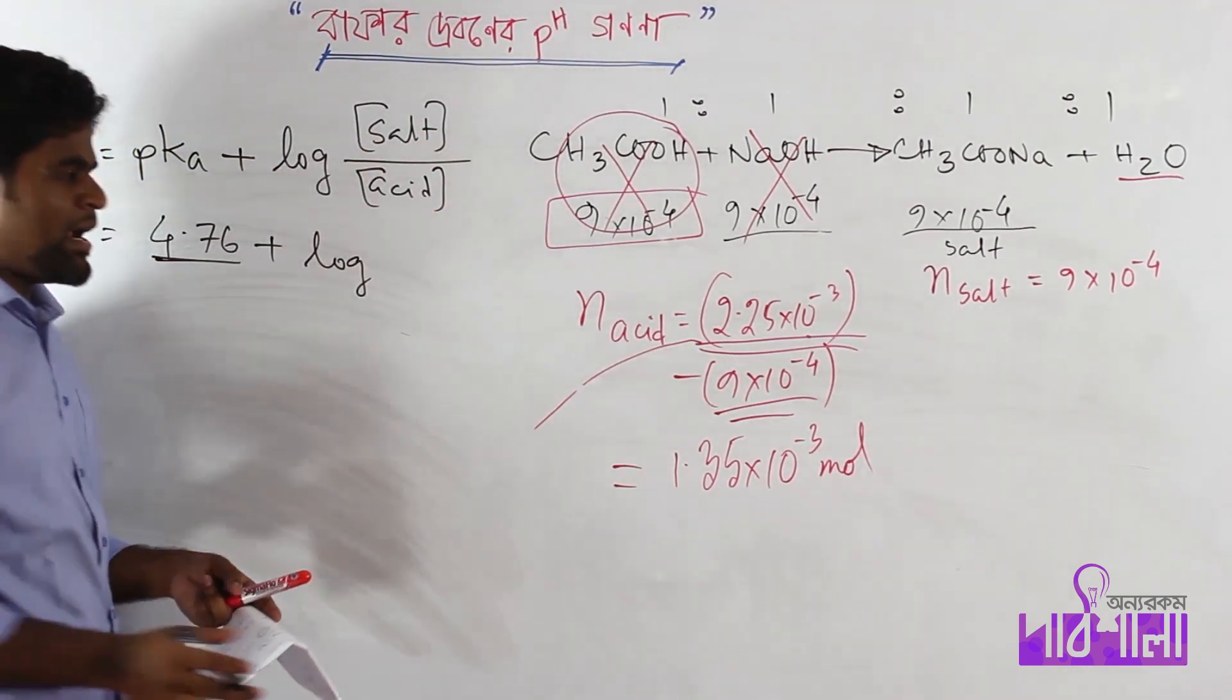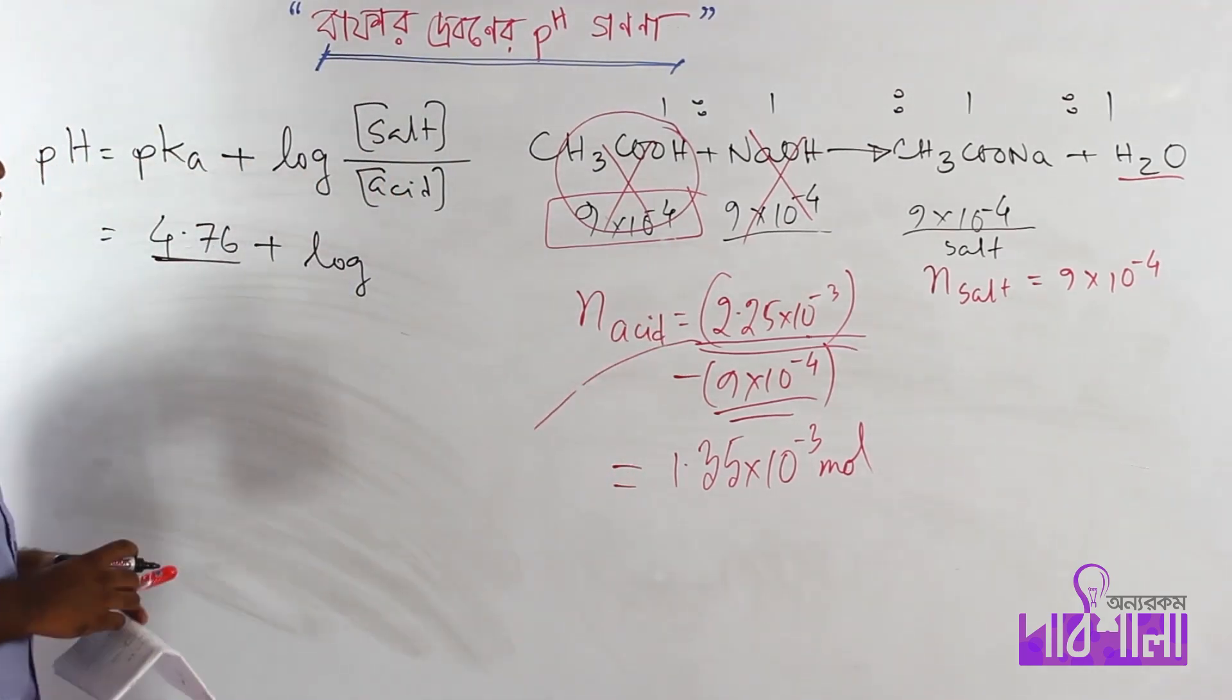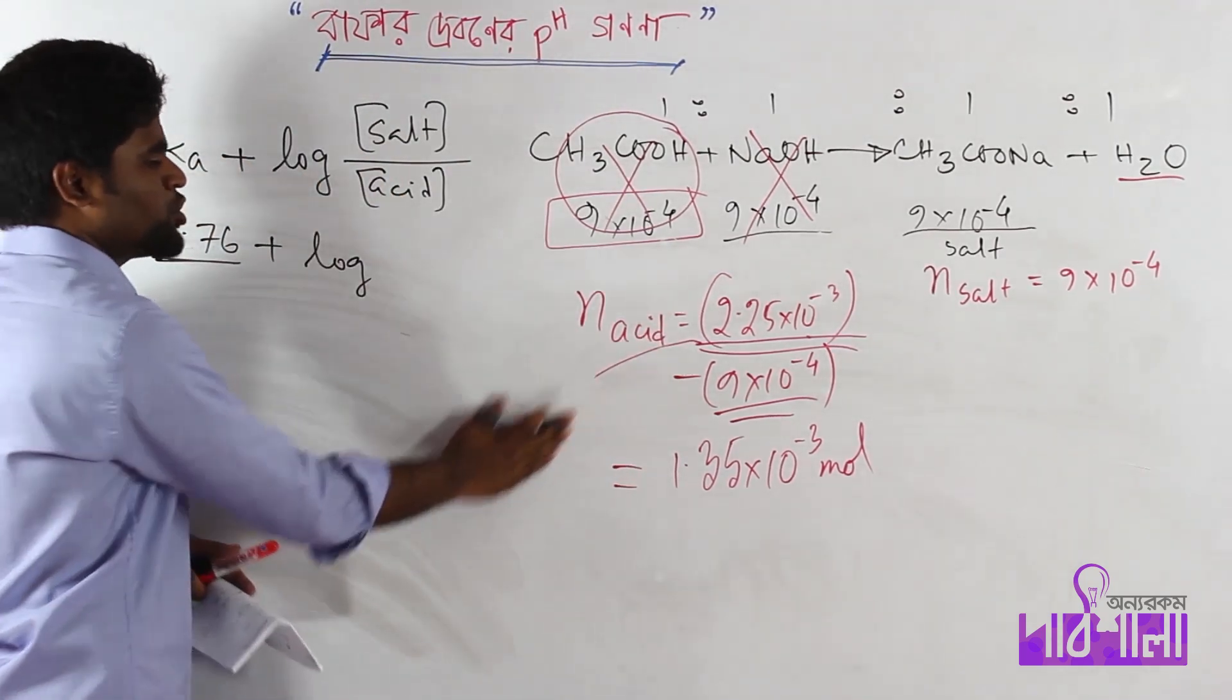Here we can write the mol numbers directly. The volume cancels out when we take the ratio, so we just use mol numbers.